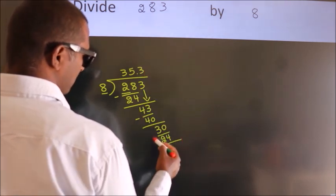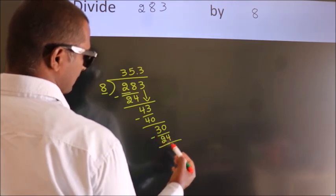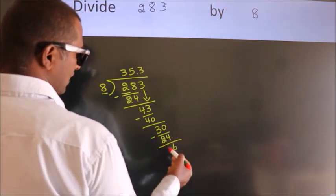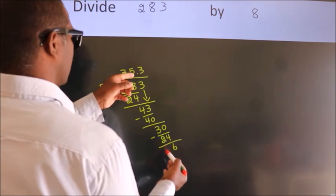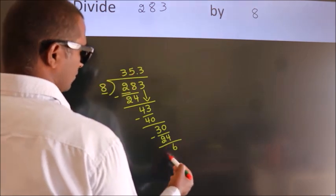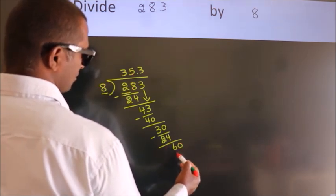Now we subtract. We get 6. After this, we already have the decimal, so directly take 0. So, 60.